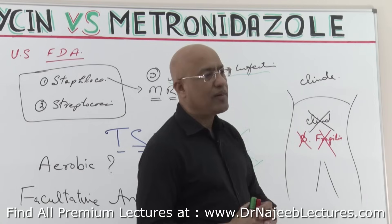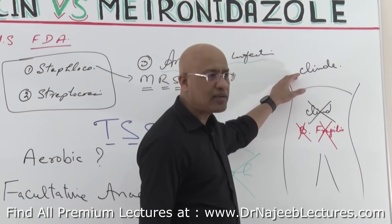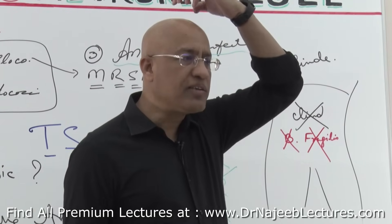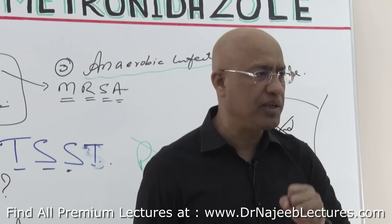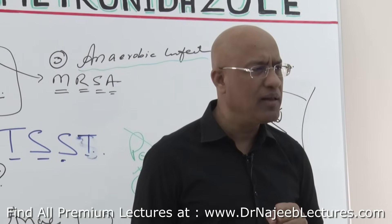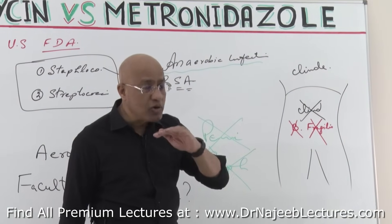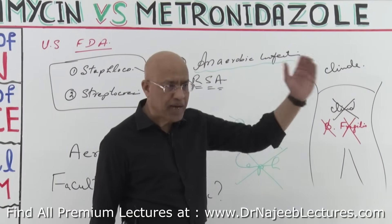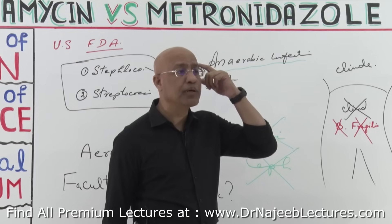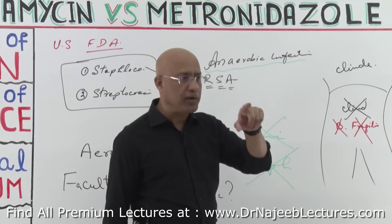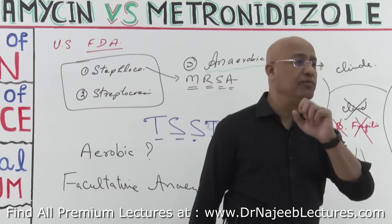Clindamycin is used above the diaphragm, but there is one condition where Clindamycin is not used — when you have mixed anaerobic infection in the central nervous system. If someone has a brain abscess, you don't use Clindamycin, because Clindamycin does not cross the blood-brain barrier. It therefore fails in CNS infections. In that case, you use metronidazole, which can cross the blood-brain barrier, in combination with other drugs to cover organisms not susceptible to metronidazole.